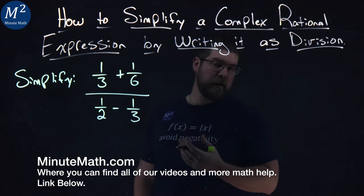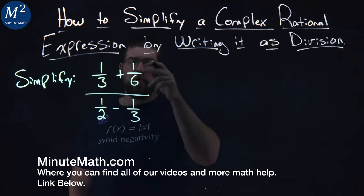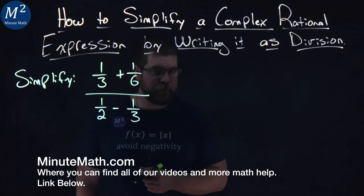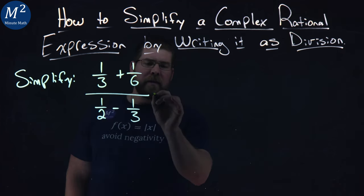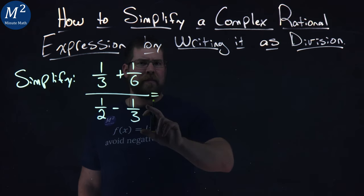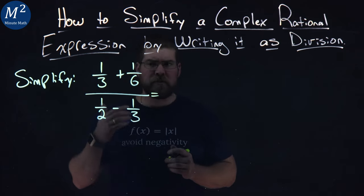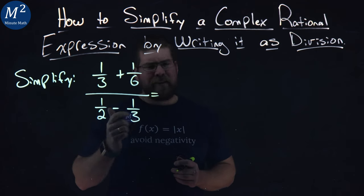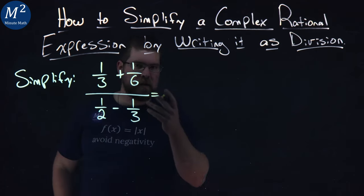We're given this problem here, we gotta simplify it: 1/3 plus 1/6, all over 1/2 minus 1/3. Now, the way I like to go about this is I'm going to simplify the numerator and the denominator of the large fraction. But to do that, I have to find a common denominator for each part here. A lot of fractions here, almost fraction inception.